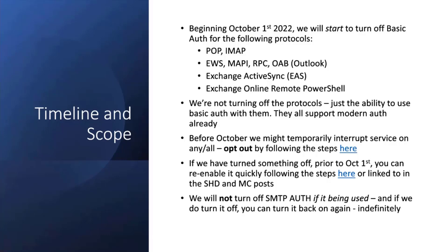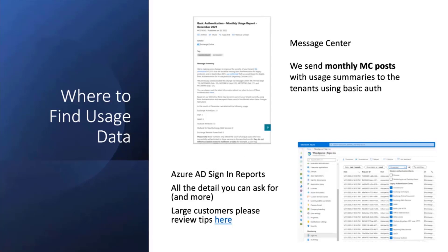The question most customers ask is: how do I know if I'm using basic auth? We've been sending message center posts to all tenants who use basic auth every month since about October last year — a customized per-tenant message with a summary of usage like this much IMAP and this much POP. The numbers are indicative, not precise, because something like Exchange Web Services is used by applications and Outlook for Windows and Mac, making it hard to be exact.